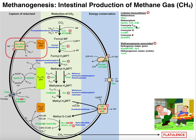F420 has some other functions elsewhere, and then Co-M and Co-B are going to be involved pretty much only in methanogenesis. So methanofuran is going to be ligated to carbon dioxide with subsequent reduction, and those electrons are going to come from ferredoxin. Notice that this is the reaction we talked about for hydrogen generating this reduced ferredoxin pool — here's our hydrogen gas.